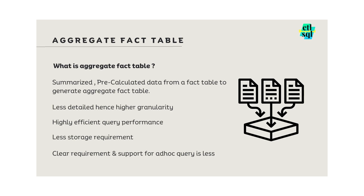So what is an aggregate fact table? An aggregate fact table is a summarized, pre-calculated dataset derived from a fact table. It stores less detail, so the granularity is higher. It is highly efficient when it comes to query performance and takes less storage because you are storing aggregated, summarized data and not the individual transactions.